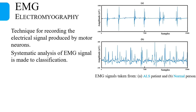As ALS doesn't have any single known cure, the only thing we can do is early and accurate detection of the disease, which helps in designing proper treatment to add a few years to the patient's life. In this regard, a systematic analysis of the electromyographic signal is made for classification of ALS patients and normal persons.